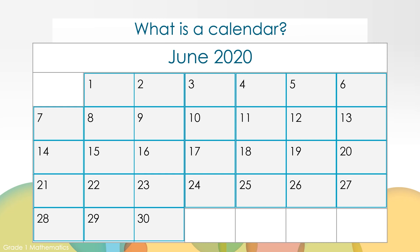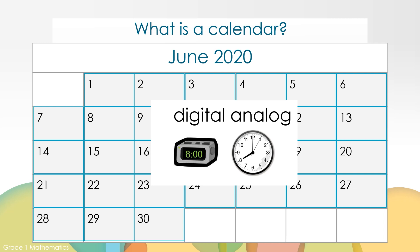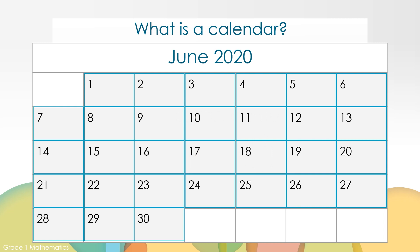What is a calendar? A calendar is a tool you can use to measure time. Yesterday you learned about clocks — digital clocks and analog clocks. They are both tools that measure time. Calendars are another tool that we use to measure time.